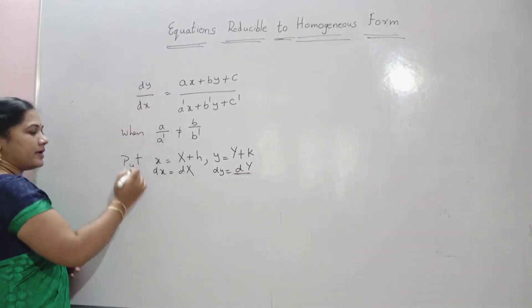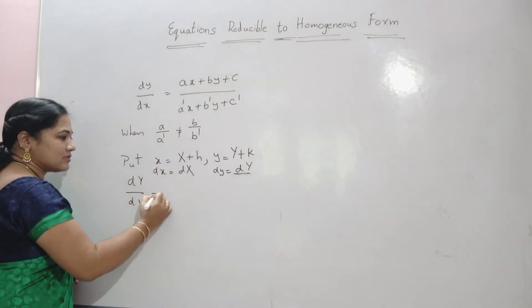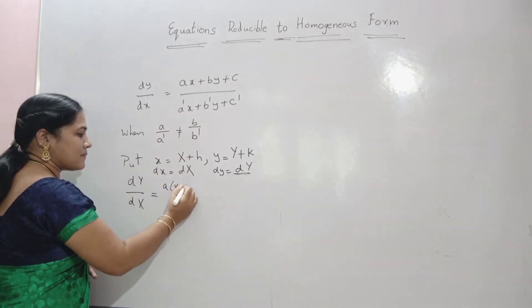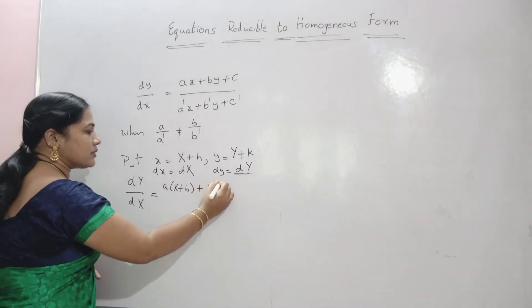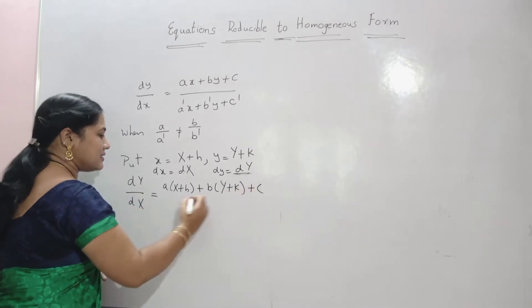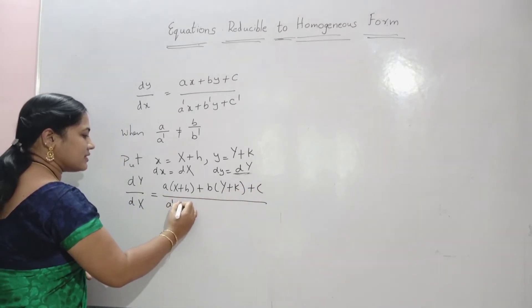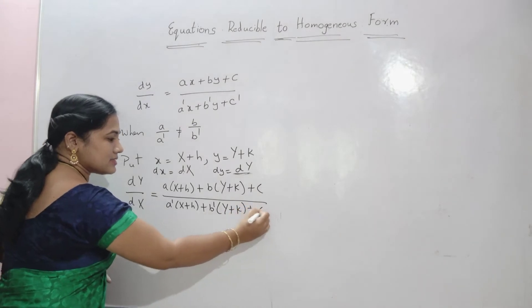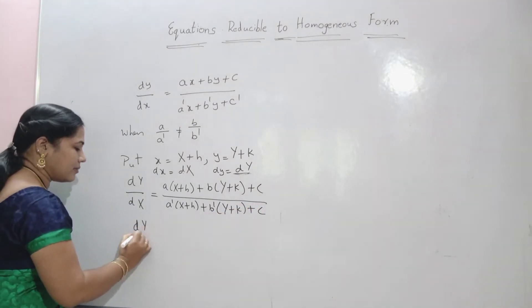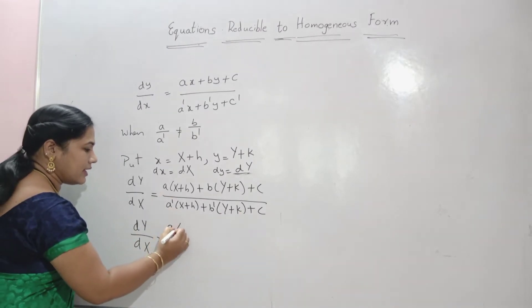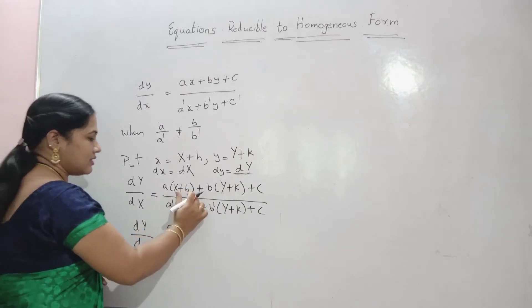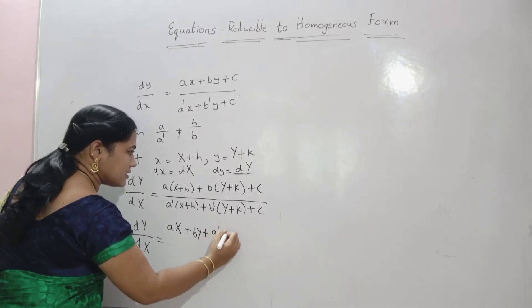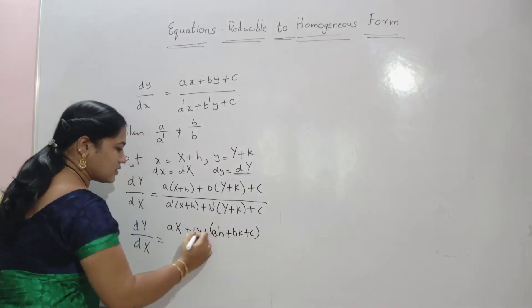Therefore, in place of dy by dx you can write dY by dX, which equals a into (capital X plus h) plus b into (capital Y plus k) plus c, divided by a-dash(X plus h) plus b-dash(Y plus k) plus c-dash. Expanding: dY by dX equals aX plus bY, then the constant terms: ah plus bk plus c.